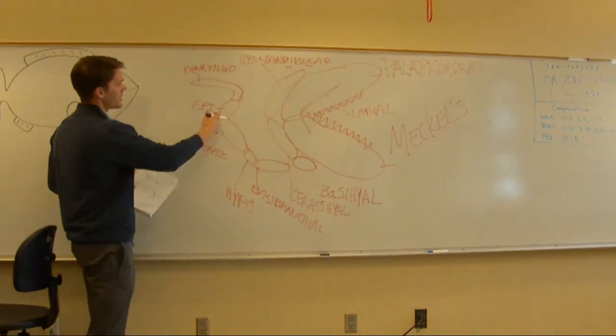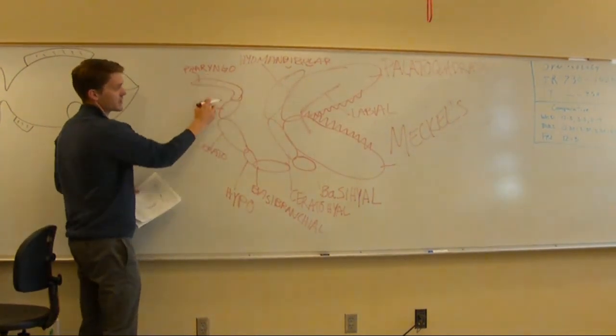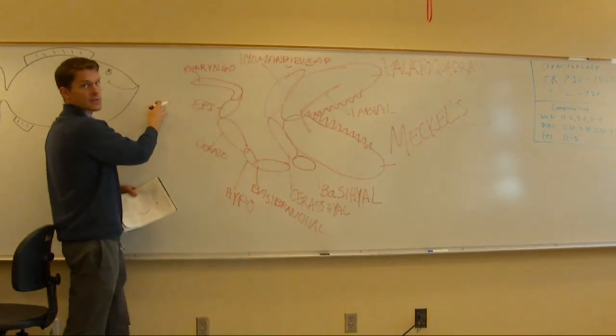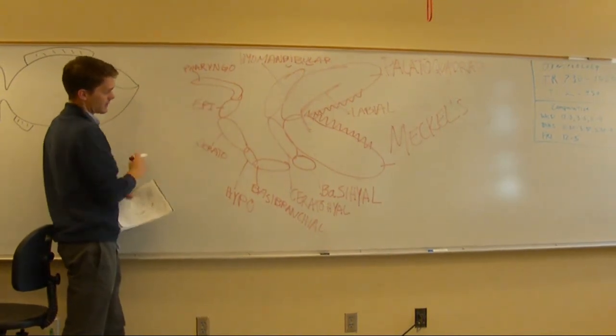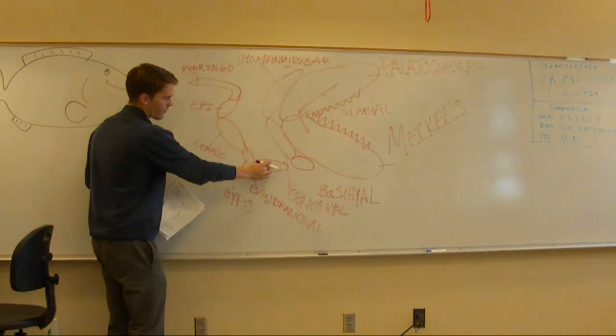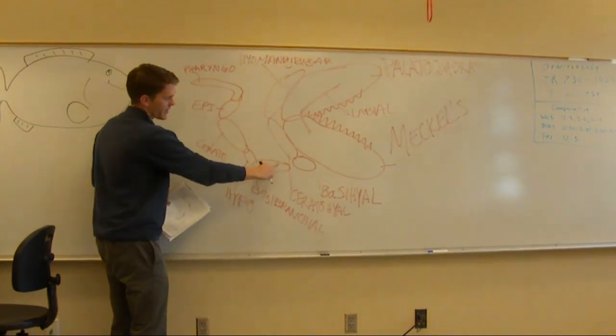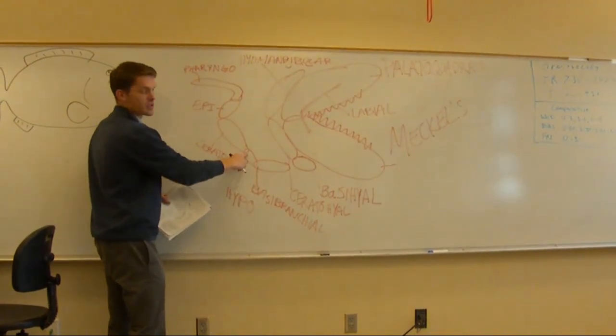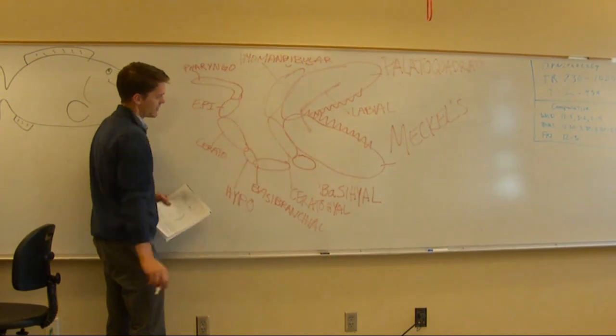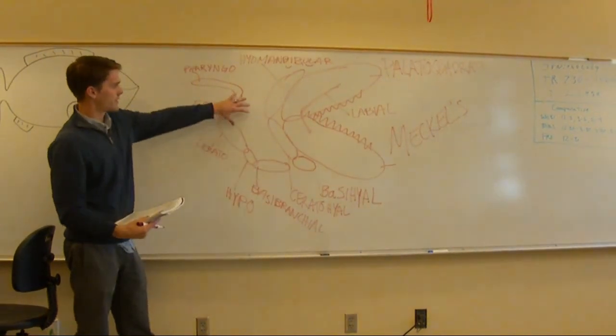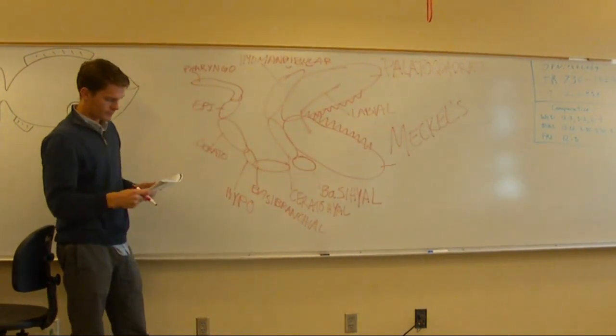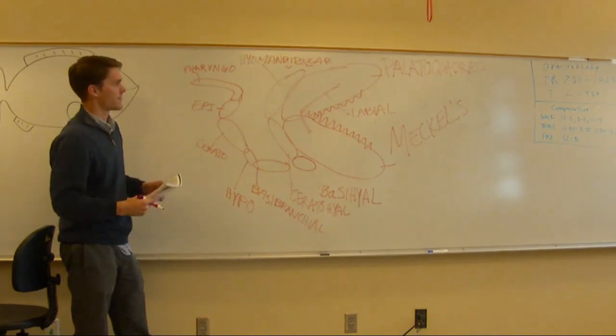Okay, so these repeat. The pharyngeal, the epi, and the cerato, they repeat five times because you have a bunch of gills right here. You only have one, there's two pieces to the base of branchial, and there's two hypobranchial, two or three. But the rest repeat. That's basically it. All right, thanks.